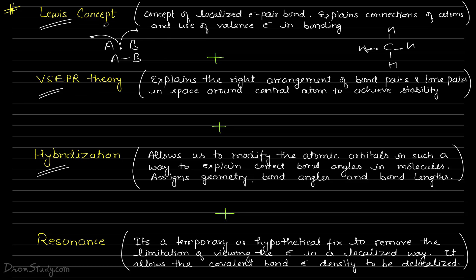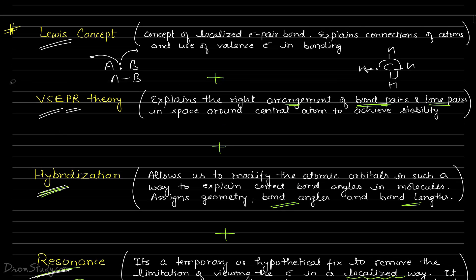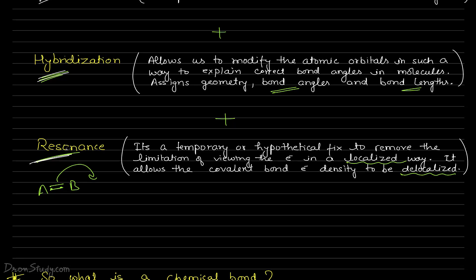Then came VSEPR theory — Lewis concept doesn't tell us the structure: what arrangement, what angle, what orientation in space. VSEPR theory tells us how bond pairs and lone pairs are arranged in space. Then resonance says that pi bond electrons are not fixed — they can move, they can be delocalized. So the electron cloud is not localized; it can be delocalized — that is what resonance discusses. The sequence is: first Lewis theory, then VSEPR theory, then hybridization, then resonance.